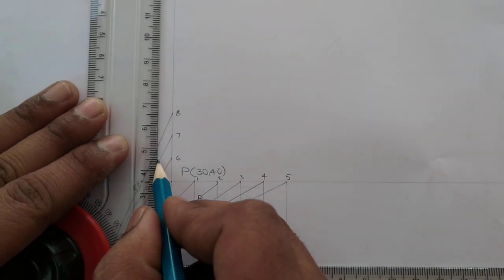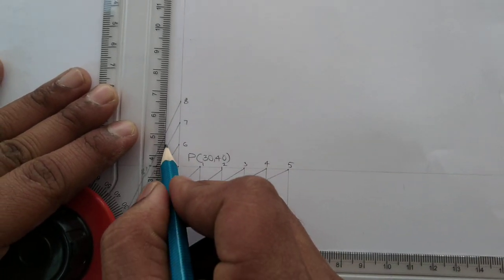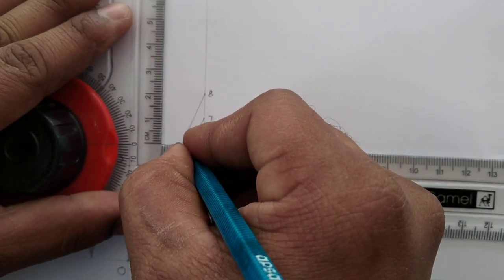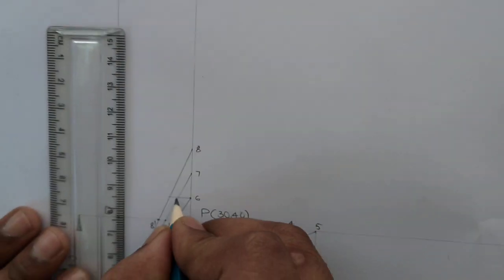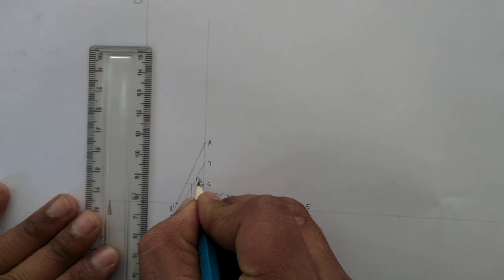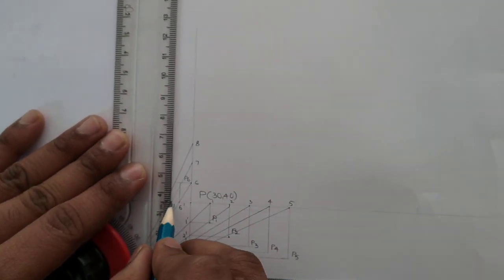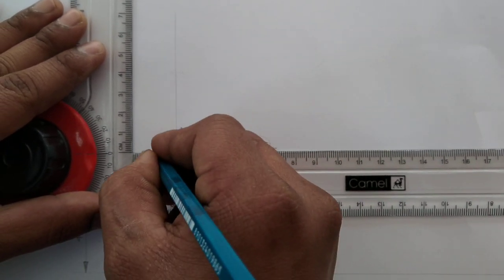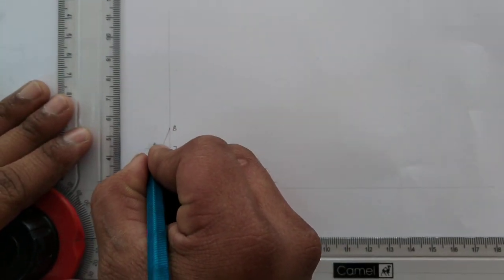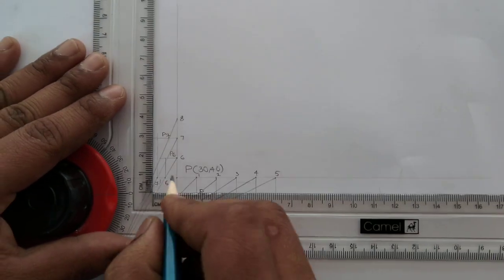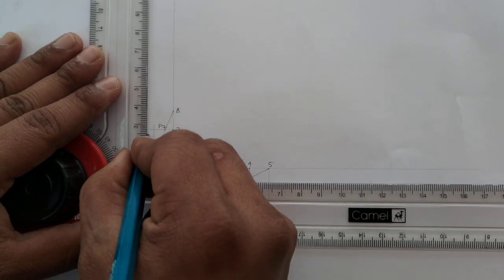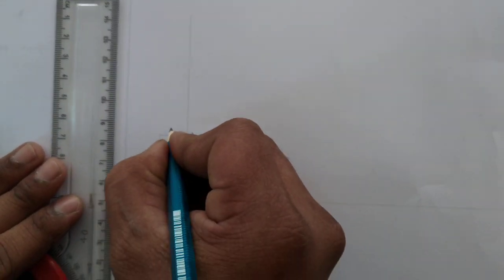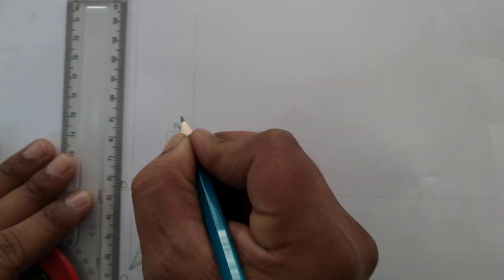Similarly, we can do the same procedure for the remaining points. From 6 dash we draw a vertical line, and from 6 we draw a horizontal line — so here we will be getting P6. From 7 dash a vertical line and from 7 a horizontal line — so this is P7. And from 8 dash a vertical line and from 8 a horizontal line — so here we will be getting P8.